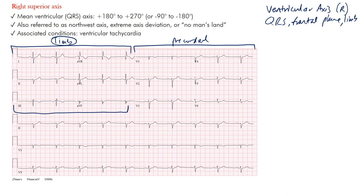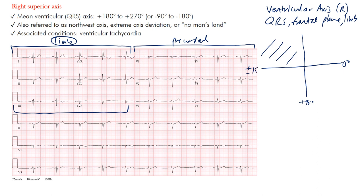We're finding right superior axis. If we draw our quadrant system, the right superior axis occupies this region. Zero degrees is here, positive 90 degrees is here, plus or minus 180 degrees is here, and negative 90 degrees is here. Normal axis for adults is between negative 30 degrees and positive 110 degrees — all that region is considered normal.